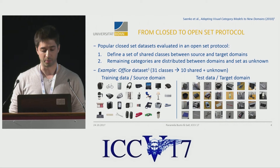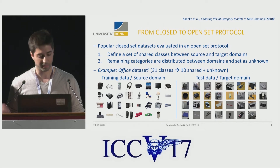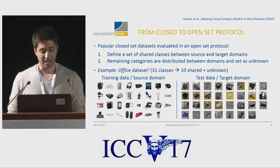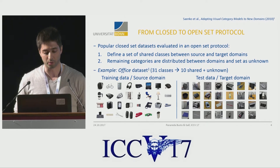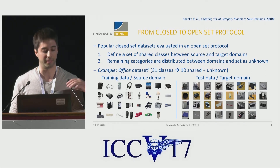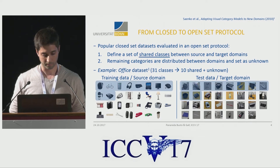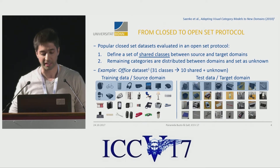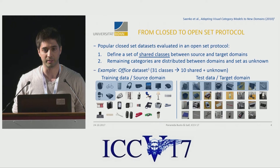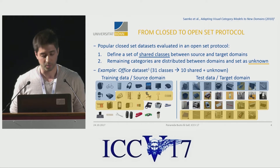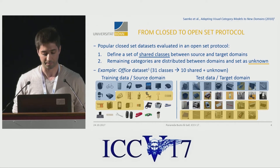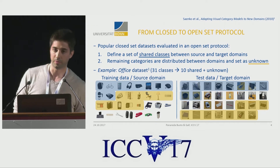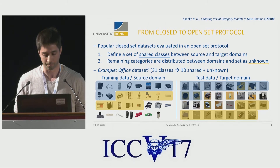Therefore, our first proposal is a simple port from a closed-set scenario into an OpenSet protocol. Using the Office dataset, which has 31 classes, the first step is taking shared classes between both domains — specifically the 10 first classes of both domains. In the second step, we distribute the remaining classes: the next 10 classes belong to the source domain and are labeled as unknown, and the last 11 classes are in the target domain and also labeled as unknown.